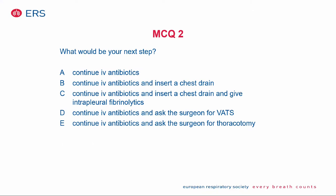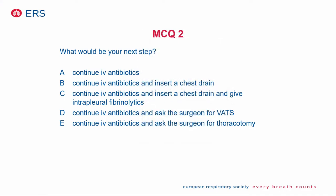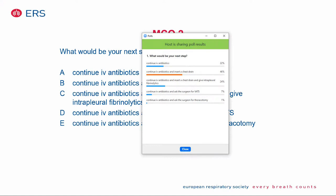Would you start the child on IV antibiotics only? Would you insert a chest drain as well? Would you insert the chest drain and give intrapleural fibrinolytics? Or would you ask your surgeons to do either a VATS or a thoracotomy? Most of you would start IV antibiotics — everyone would do that. Many of you would also insert a chest drain, and some would add intrapleural fibrinolytics.